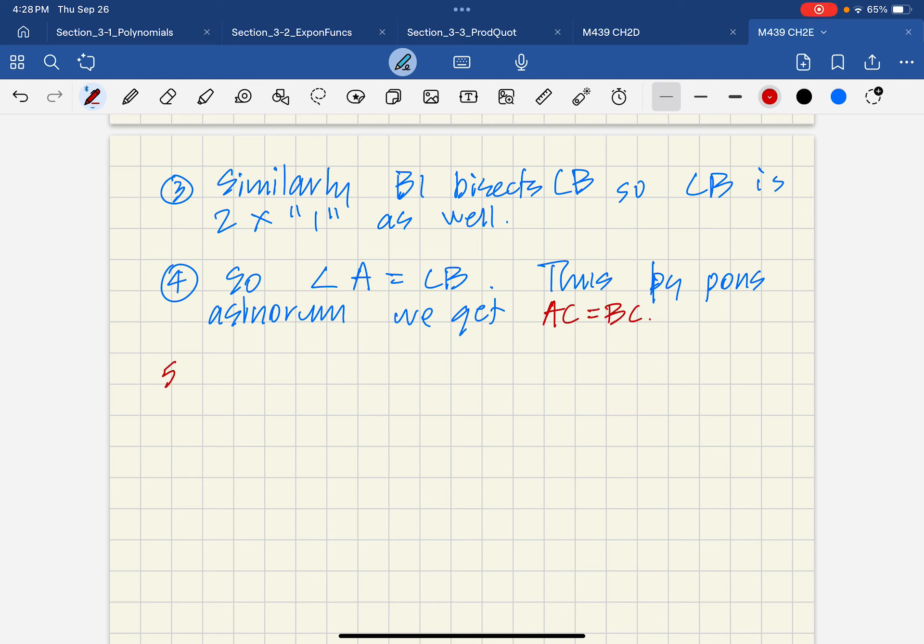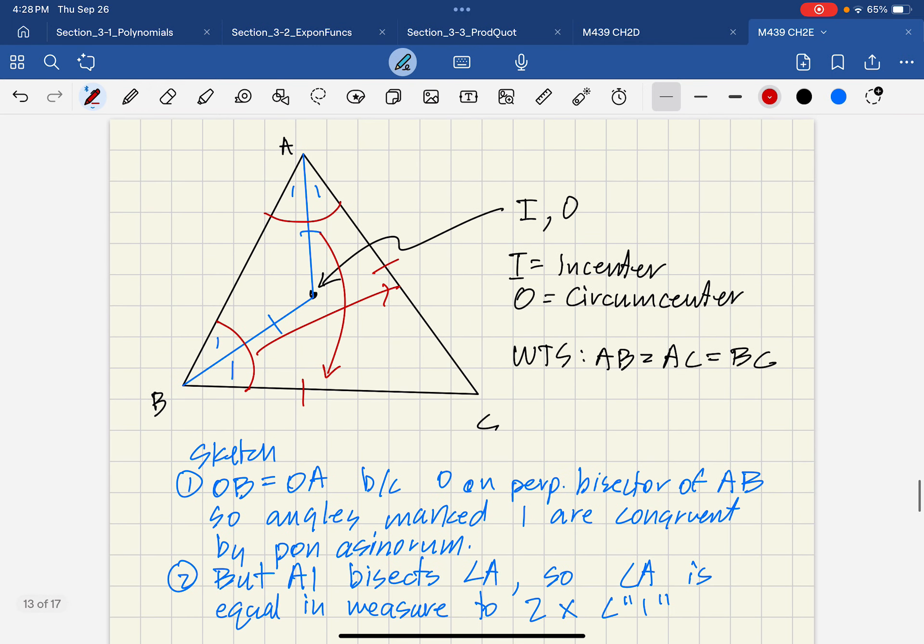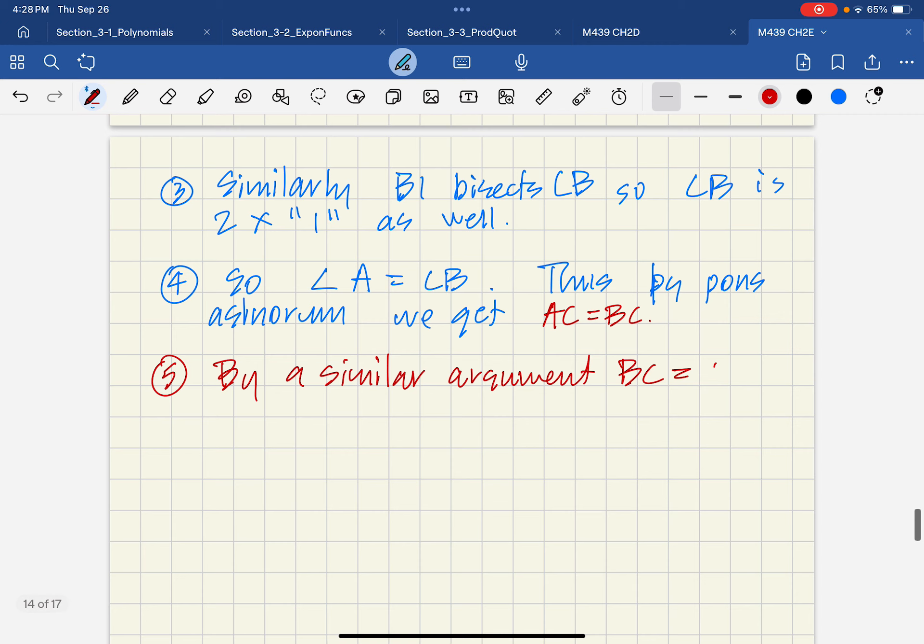And then I think to finish it off, we can just say, by a similar argument, BC is equal to, let's see, BC is equal to AB. So triangle ABC is equilateral. And that's the end of that proof.